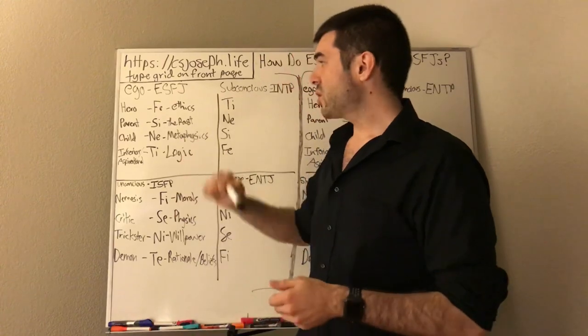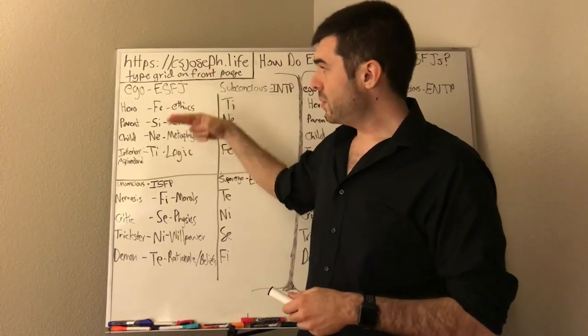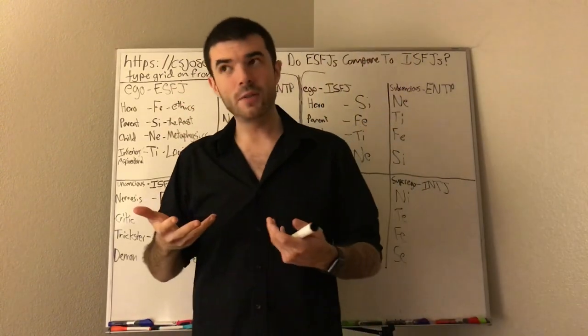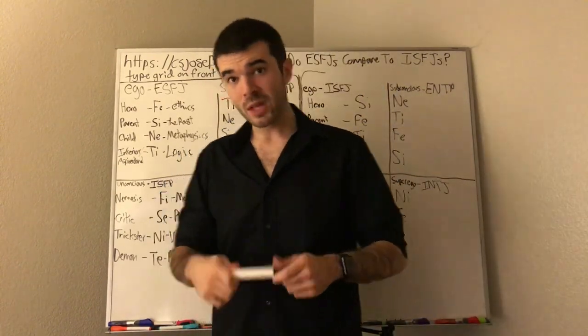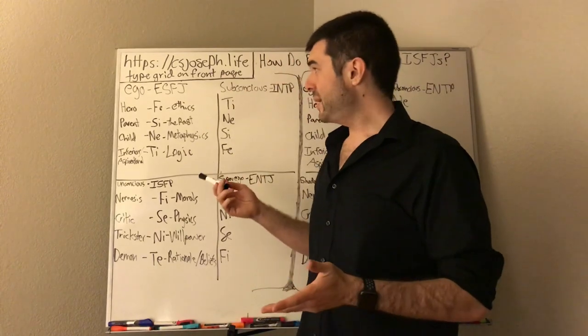ESFJs don't do that. But the ISFJ guilty until proven innocent thing basically means until you prove yourself, they're already going to assume that your intentions, by default, because they're pessimistic towards your intentions, whereas the ESFJ is optimistic towards intentions. Why is that? NE child, remember.